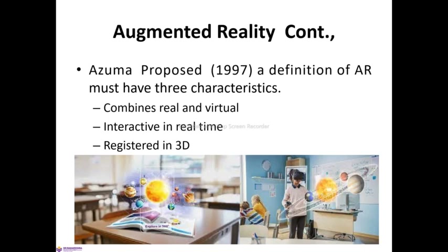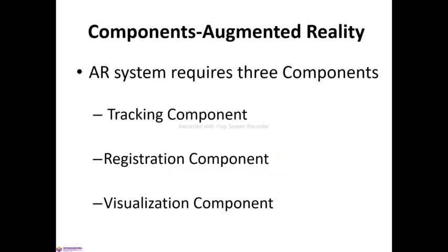Azuma proposed a definition of augmented reality that must have three characteristics. They are: combines the real and virtual environment, which is interactive in real time environment, and which is also registered in 3D coordinates.